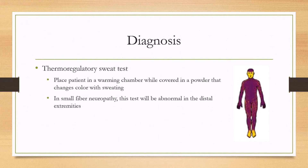Another way to diagnose this is by thermoregulatory sweat test. The patient is placed in a warming chamber and covered in a powder that changes color with sweating. As they get warmer, the parts of the body that are normal will start sweating and the powder will visibly change color. In small fiber neuropathy, the parts affected by the neuropathy will not change color — most commonly the feet.